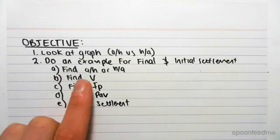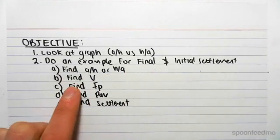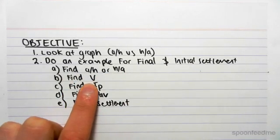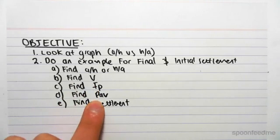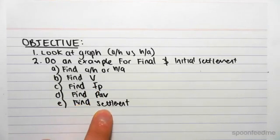We do that by finding a on h or h on a. We find v, the Poisson's ratio—that'll be given to us or we're going to have to work it out. We're going to find ip, which is from the graph. We'll then find the average pressure, and then we can find the final settlement or the initial settlement, depending on what we're looking at.